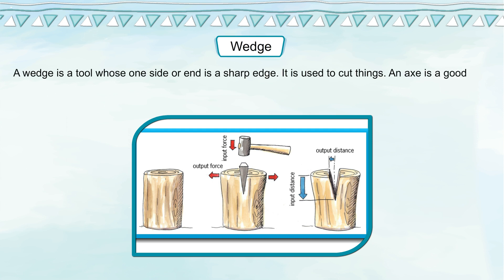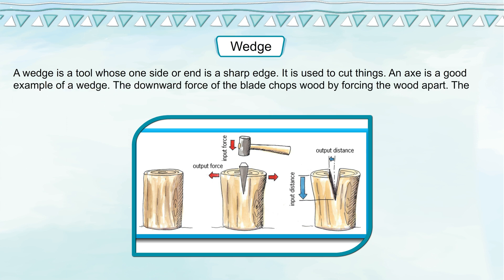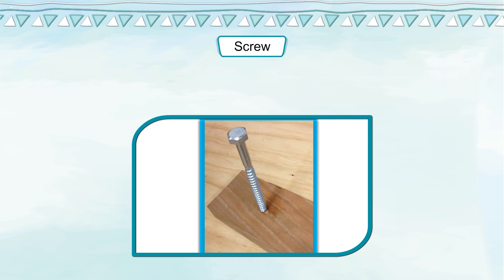Wedge: A wedge is a tool whose one side or end is a sharp edge. It is used to cut things. An axe is a good example of a wedge. The downward force of the blade chops wood by forcing the wood apart. The blade of a knife is a wedge as well.